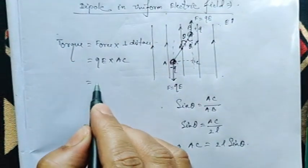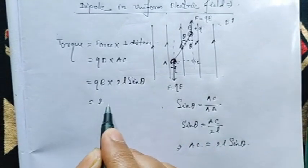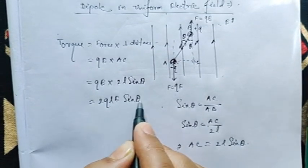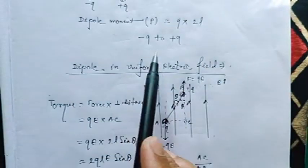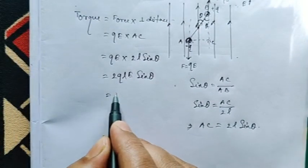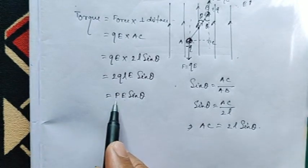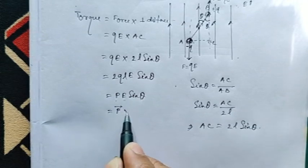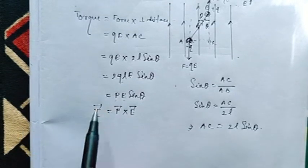Substituting into the torque formula: torque equals Q·E into AC, which is 2L sin theta. This gives us 2Q·L·E sin theta. Now, 2Q·L is nothing but the dipole moment P. Therefore, torque equals P·E sin theta. This can be written as P cross E — that is, tau equals P cross E. The torque is denoted by the term tau.